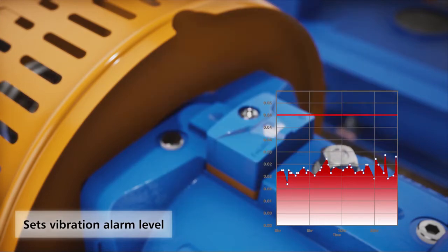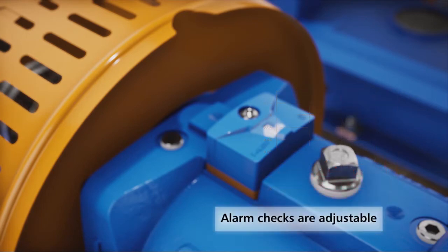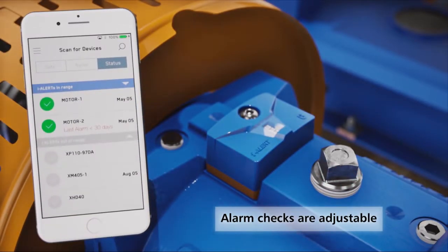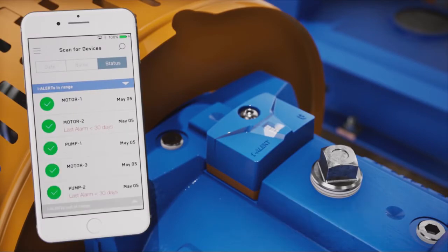You can also set the alarms to your own standard through the mobile application. The iAlert 2 device checks every five minutes if the unit is in alarm condition. The app will constantly look for iAlert 2 devices and show all the devices within range.